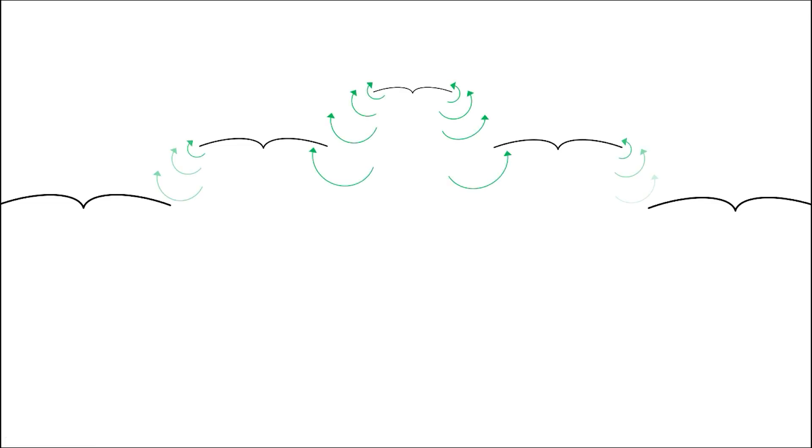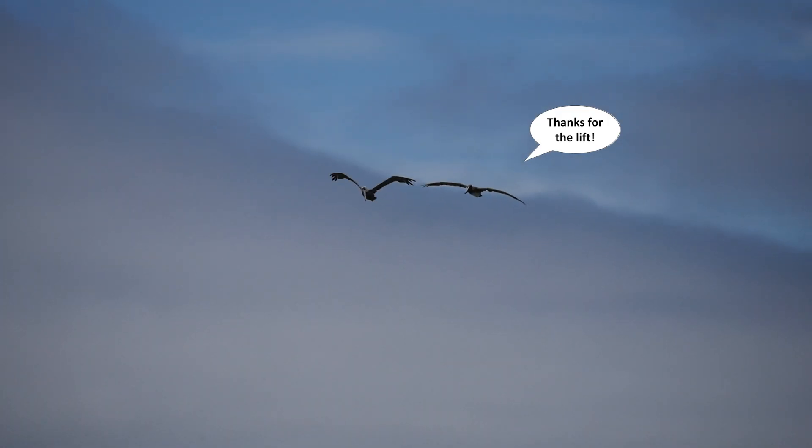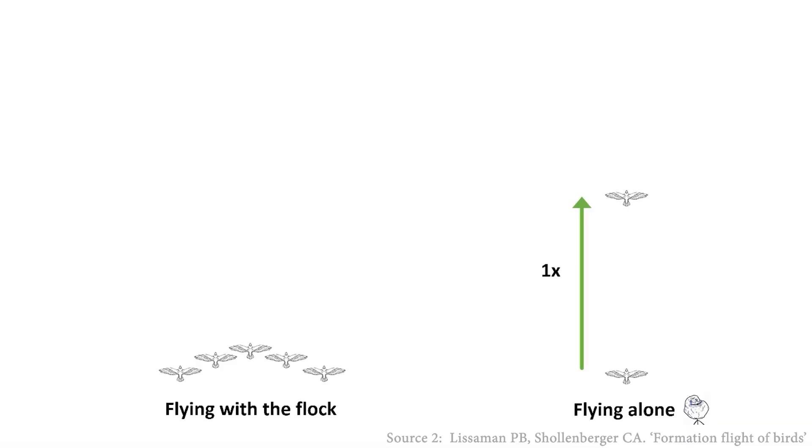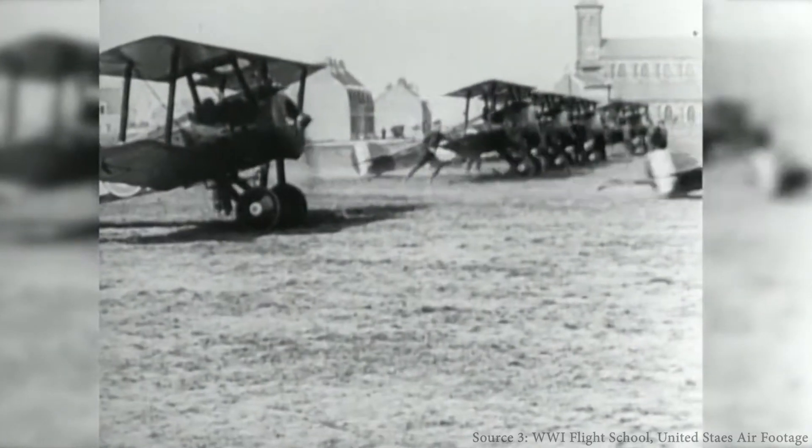So to minimize this loss, birds fly in formation, thereby collectively benefiting from one another's wingtip vortices. In fact, theory suggests that this efficiency gain can extend a bird's flight range by 70%. Applying this strategy to man-made aircraft is not a new concept.